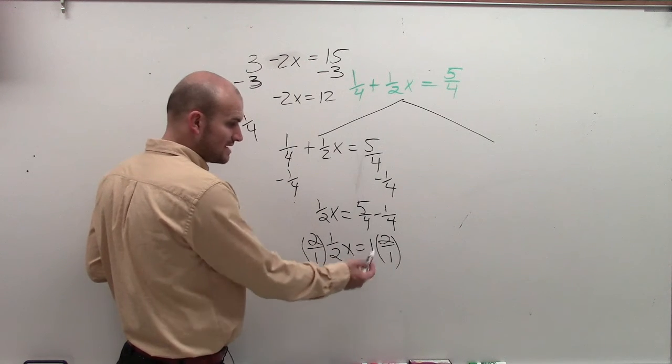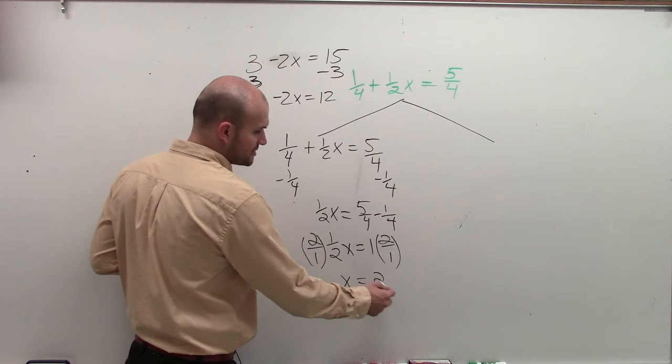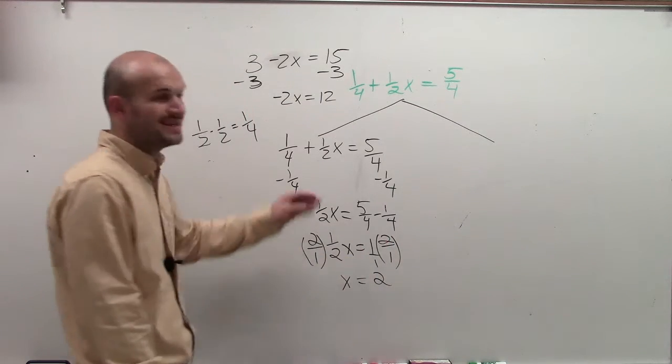1 times x is just x equals 1 times 2 over 1, which is 2. Because you can change 1 to 1 over 1 equals that. OK? That's a fraction review. I went over that.